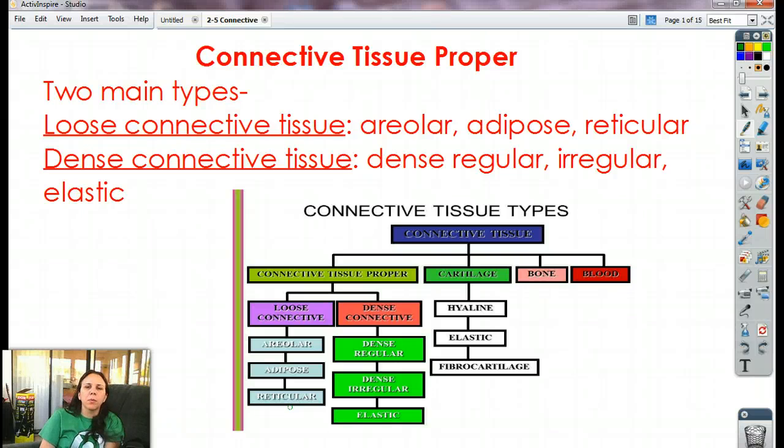All right, here's the big one. This is a big nasty one because look at all this. Connective tissue is made into four different chunks like we mentioned earlier: connective tissue proper, cartilage, bone, and blood. Connective tissue proper is broken into two categories, loose connective and dense connective.